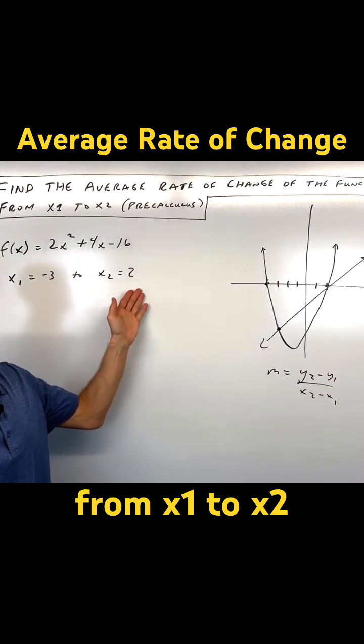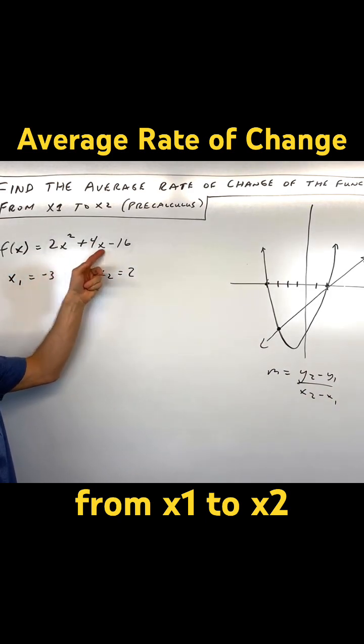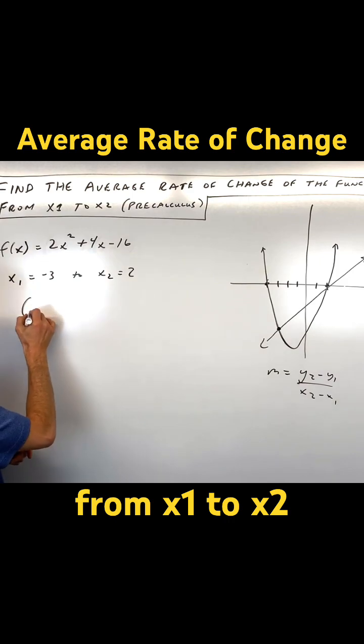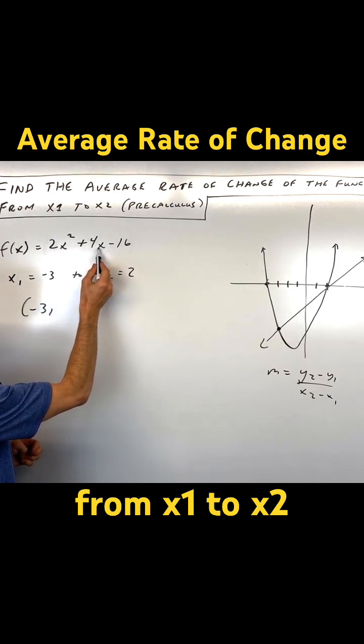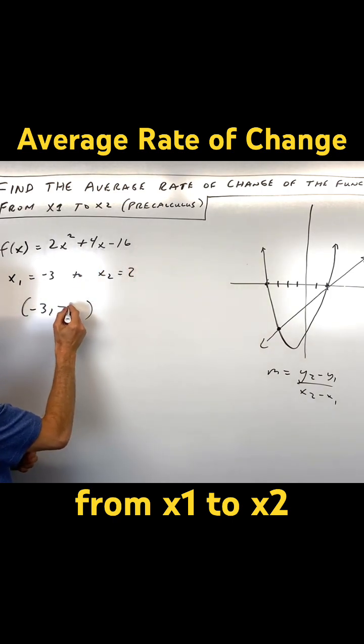We need to find the y values. So let's put negative 3 in and 2 in and see what those y values are. So this will be negative 3 comma, let's see, this is 9 times 2 is 18, minus 12, which is 6, minus 16 is negative 10.